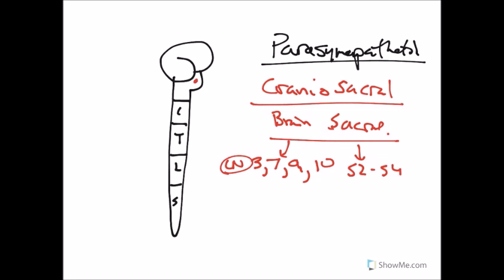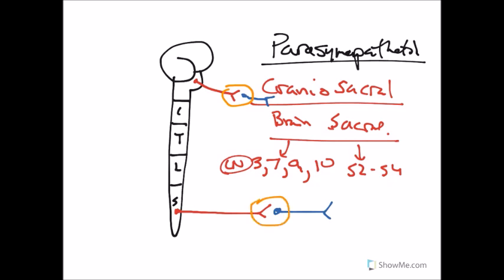Parasympathetic pre-ganglionic fibers are relatively longer than the post-ganglionic fibers — the opposite of sympathetic. When it comes to ganglia, in the sympathetic division those could be sympathetic chain ganglia, collateral ganglia, or the suprarenal medulla. The parasympathetic nervous system has a variety of other ganglia as well, like the celiac ganglia.